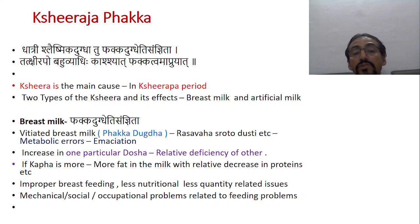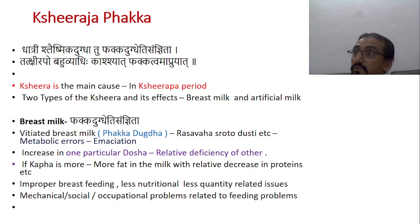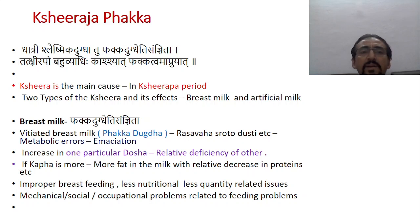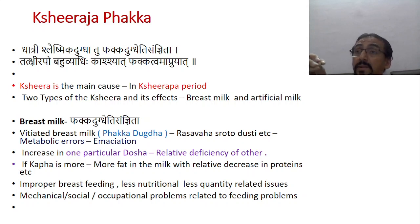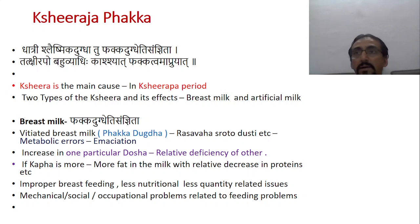Mechanical, social, and occupational problems relate to the feeding issue. When all such issues are considered together — nutritional issues, component-wise issues, social and mechanical issues — because of all these errors and the development of FTT, that should be called kshiraja fakka.